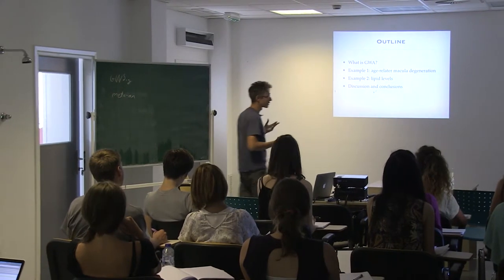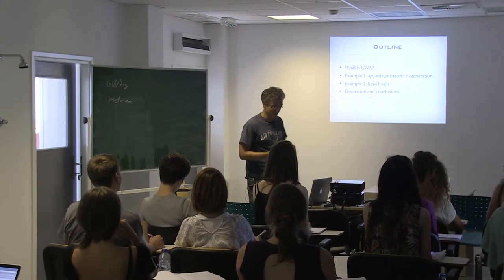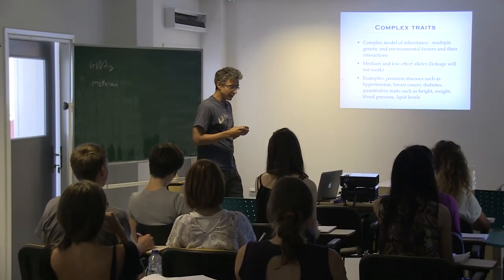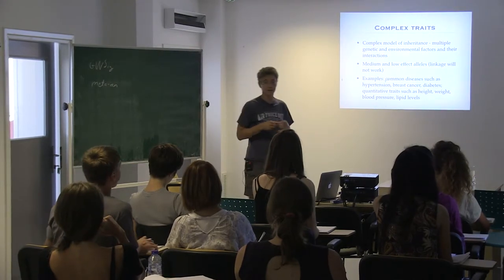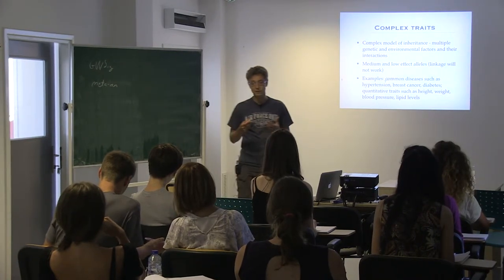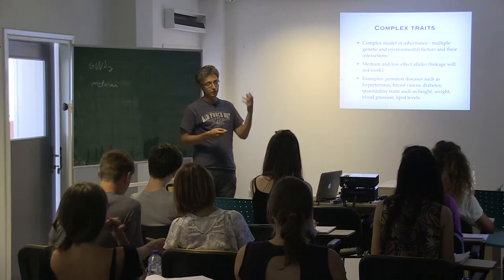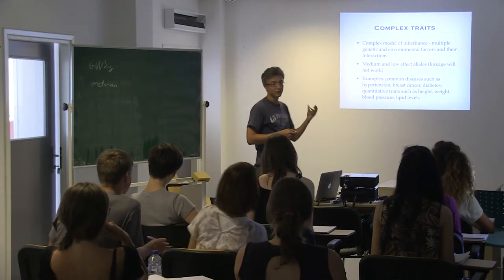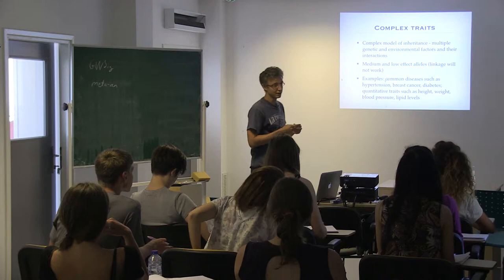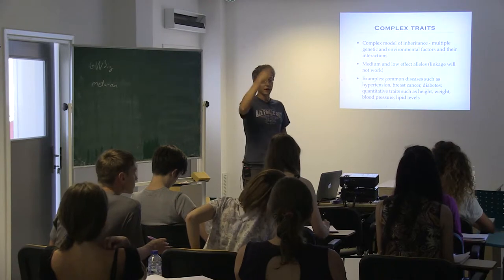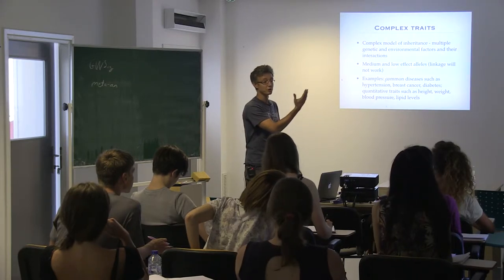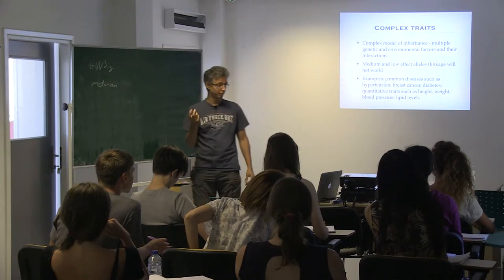I'm going to talk about what genome-wide association analysis is, give two examples, and have two slides for conclusions. When you have a simple monogenic disease, the classical way to study it would not be doing GWAS — you would do a linkage study. You'd find a family where a monogenic rare mutation of very strong effect segregates, do linkage analysis, and it's almost as easy as looking at a picture to figure out where the mutation could be.